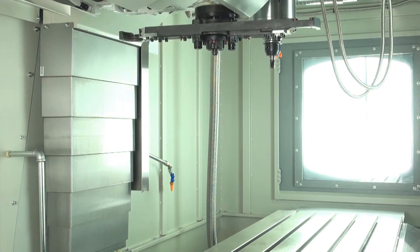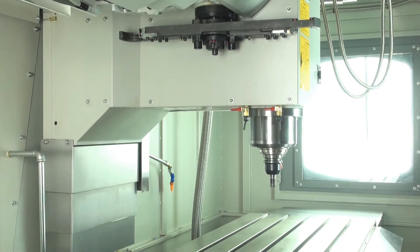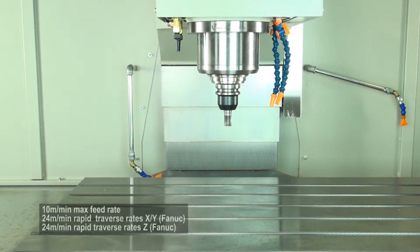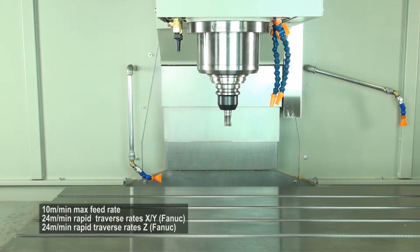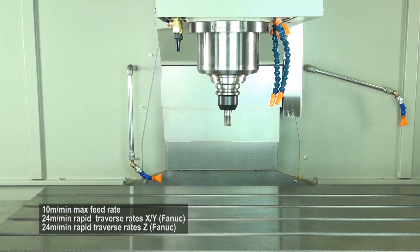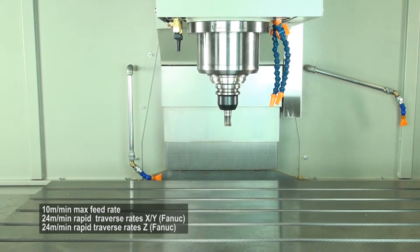Our standard spindle is BT40 but we can offer optional CAT flange. The 15kW spindle speeds are 80-8000rpm with an option of 10,000rpm fully refrigerated.